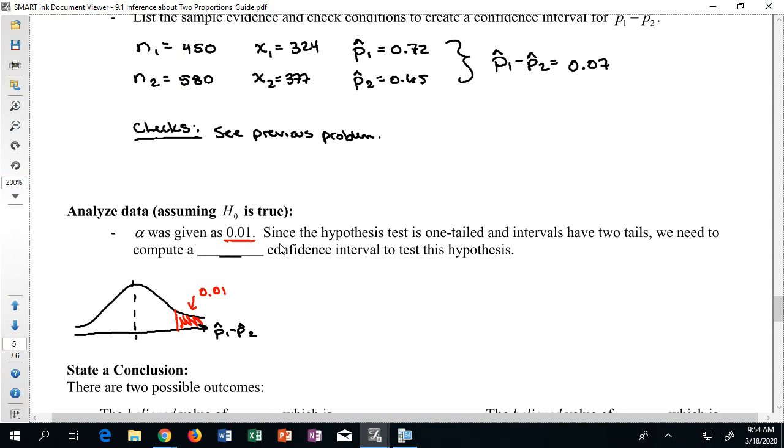But when I construct a confidence interval, I remember that it's got to be symmetrical. So even though there's only 1% in the picture, there's an implied 1% over here as well. That means that in total my interval covers 98% of the distribution.